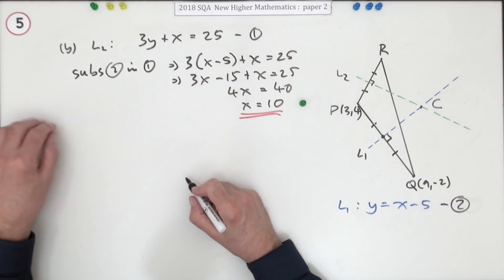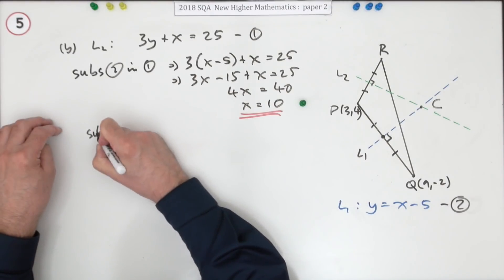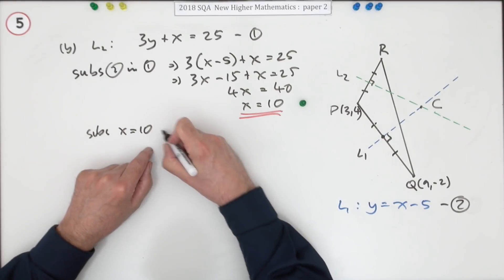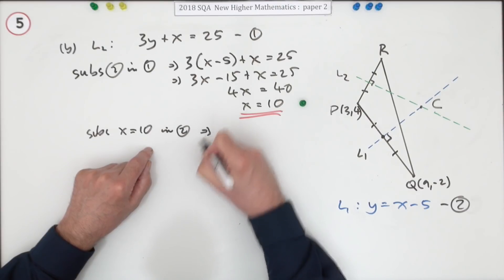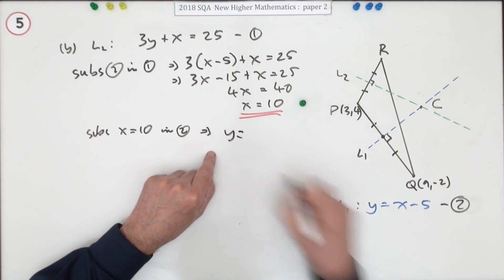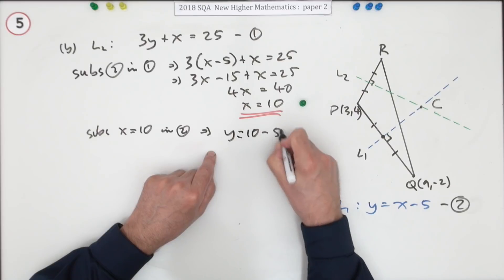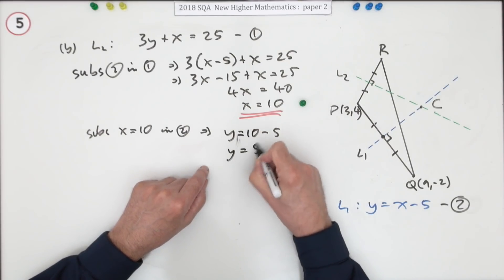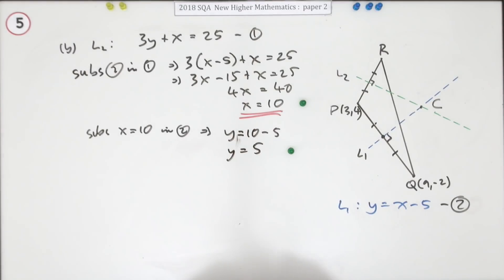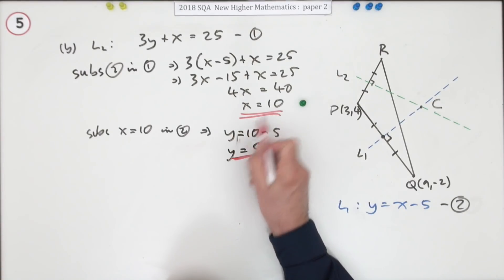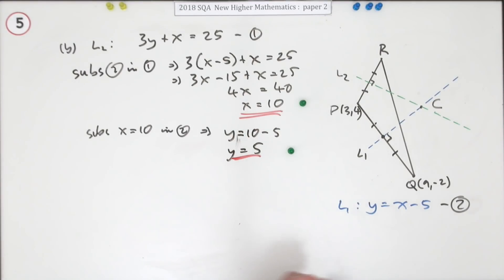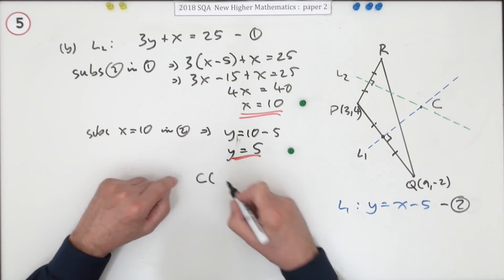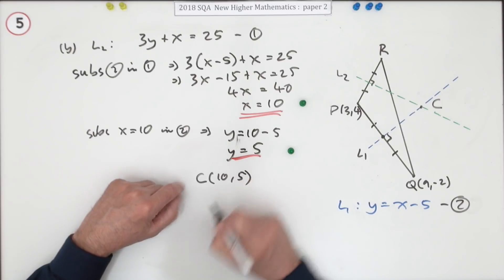Actually seems quite long when you spell it all out. And then substitute that answer into the simpler one, the one you substituted in number 2, which means that will read y equals 10 minus 5. Don't fall off. So y equals 5. And that's the mark. You actually get the marks just for stating x equals and y equals, because strictly speaking those are the coordinates. I just prefer to finish it off. C is the point 10, 5.